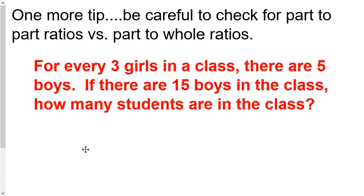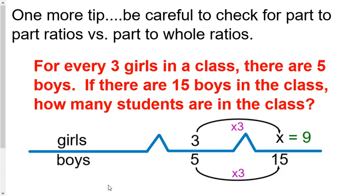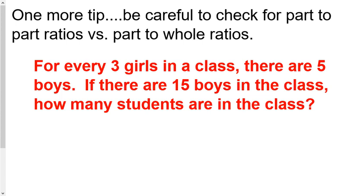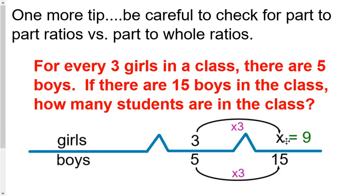Now this is what I see a lot for a problem like this. Notice this time we used the scale factor method. We said, on the bottom, 5 times 3 is 15, so we multiply by 3 on the top also. The problem with this is if you look carefully at the question, you'll notice we're not needing to compare girls to boys. We're needing to compare if there are 15 boys, how many students are in the class. So when we looked at it the other way, it was not correct. This was not correct because we were finding that if there were 15 boys, there would be 9 girls, but that's not what the question's asking.